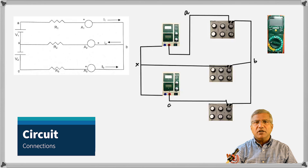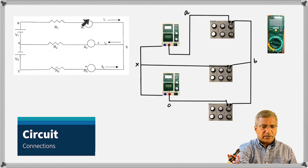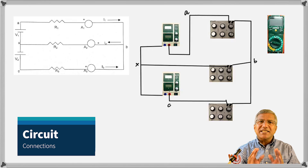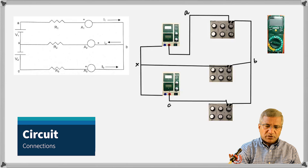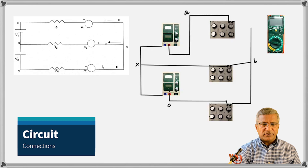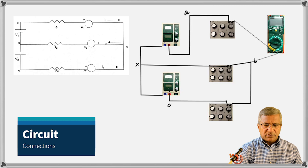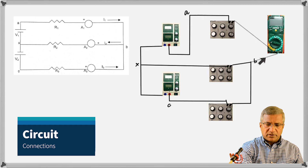Now the connections are ready. When we want to measure current I1, we remove this cable and put the multimeter in that position so the same current flows through the multimeter. The cable is removed, the multimeter is ready, and you connect it in. Now current I1 will flow through the multimeter and the circuit is completed.